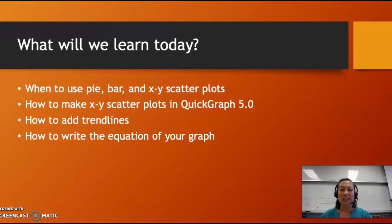So before you head out and practice this on your own, let's recap. Today you should have learned when to use a pie chart, a bar chart versus an XY scatter plot. You should have learned how to make XY scatter plots in Quick Graph 5.0, how to add trend lines to those graphs by hitting the curve fit feature, and once you hit the curve fit feature, how to take that equation and translate that into the physics variables. Excellent. So with that, we're going to go practice and I'll see you next time. Bye.